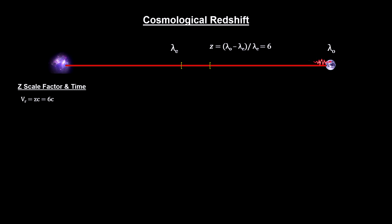First, redshift gives us an object's receding velocity. With our model, we have the object moving away at six times the speed of light.